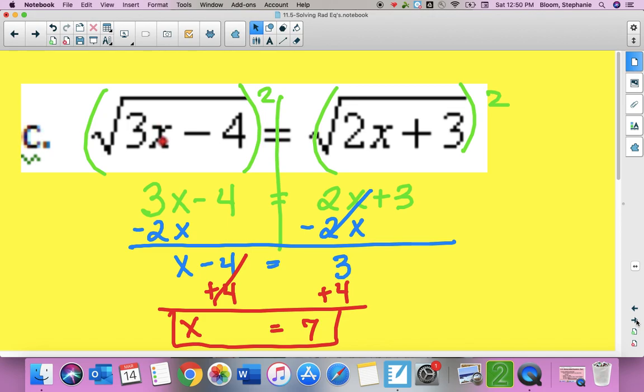And so x is equal to 7. And we're just going to do a check. If I plug in 7 right here, 3 times 7 is 21 minus 4 would be 17. And then 2 times 7, if I plug in 7 here, would be 14 plus 3 is 17. And so they do, in fact, check.